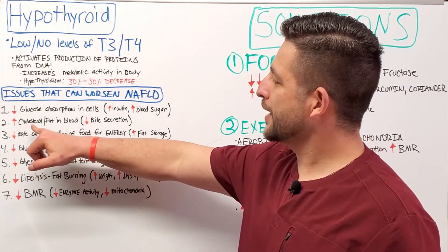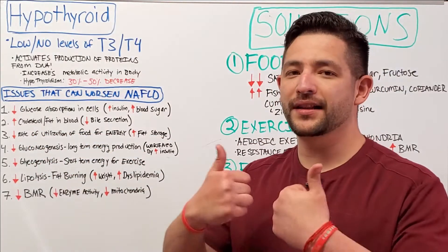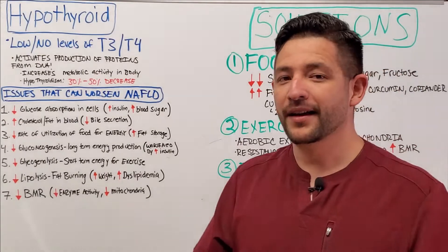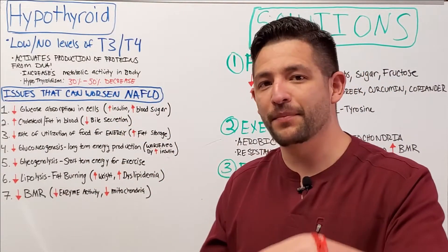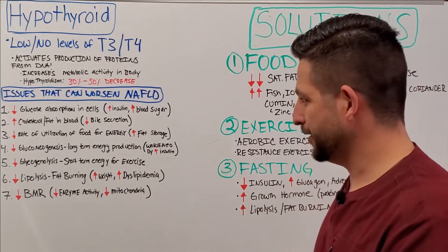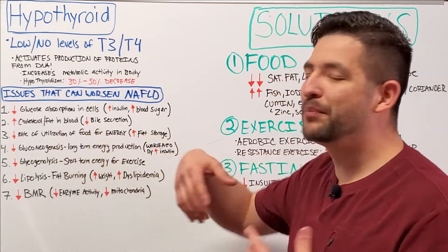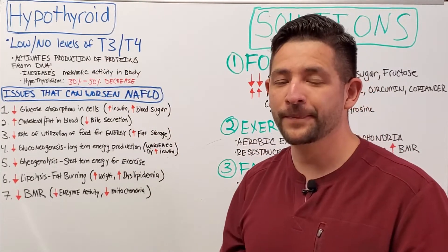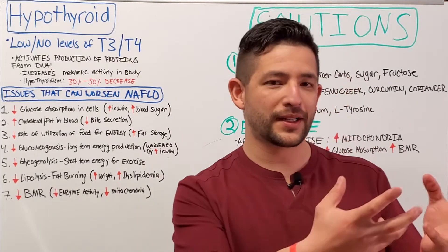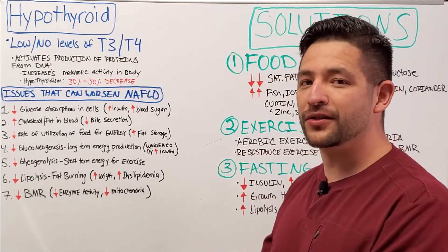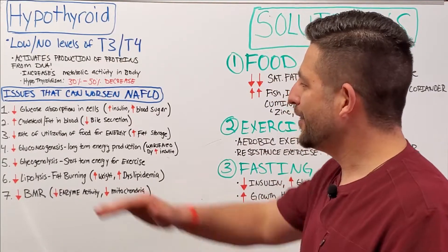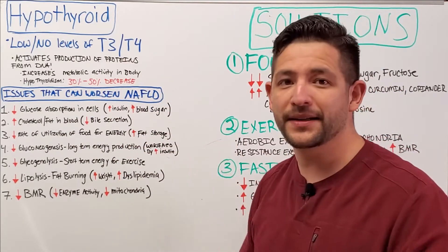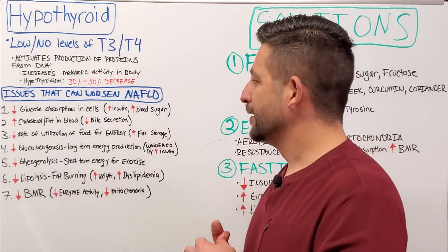The next issue is that with this condition you also get an increase in fat and cholesterol in your blood. When you have a lot of fat in your blood, it eventually travels to the liver where it's deposited and stored, worsening a fatty liver. This occurs because the amount of bile produced and secreted by your liver goes down with low T3 and T4. Bile is one of the ways your liver pulls cholesterol from your bloodstream and secretes it out into your large intestine to be expelled — and that pathway gets dampened with a hypothyroid condition.